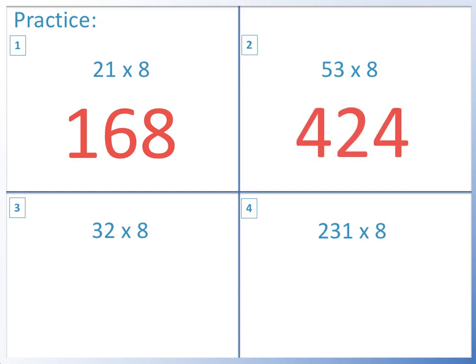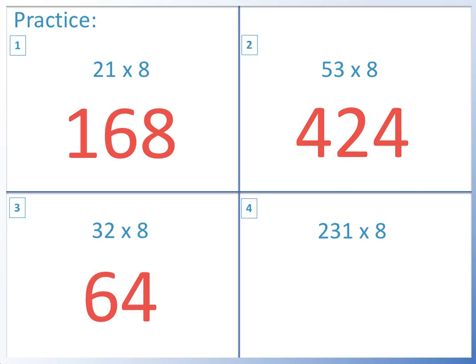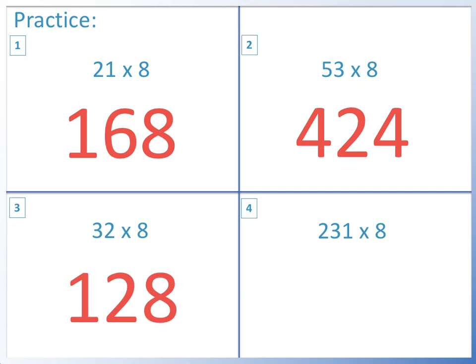Question 3: 32 times 8. Double it equals 64. Double it equals 128. Double it again equals 256.